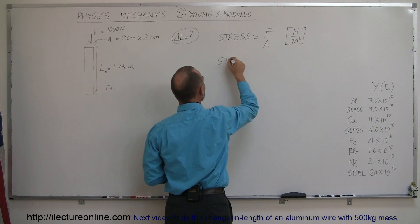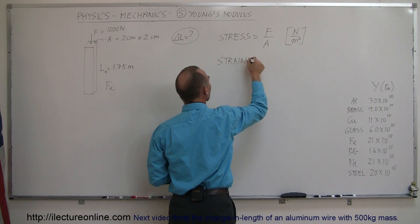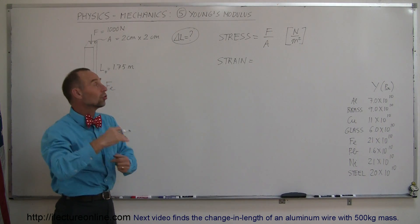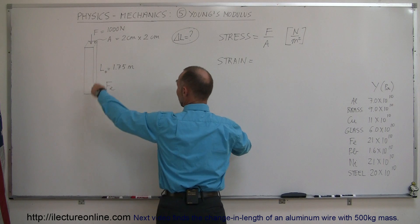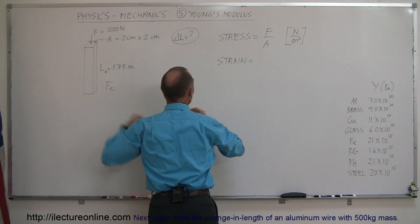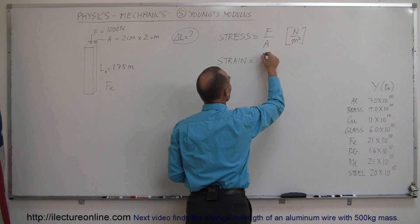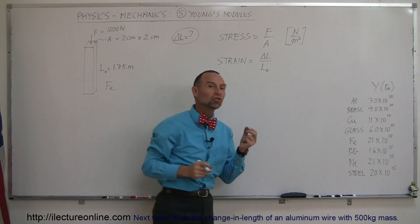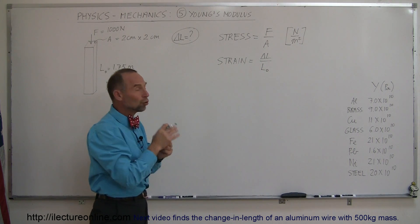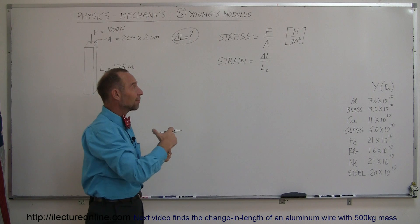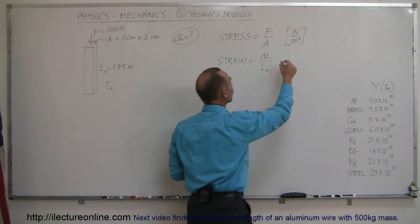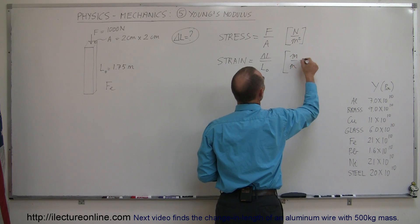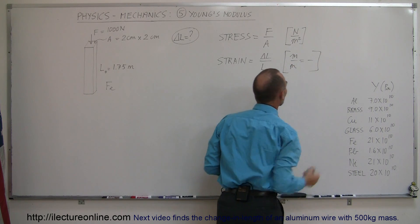Strain is the ratio of the amount of deformation — how much the shape of the object changes relative to its original shape. In the case of a problem where we talk about the linear dimension only, it's the change in the length divided by the original length. Notice that both the change in length and length have units of meters — meters divided by meters — so the units cancel, and there are no units.